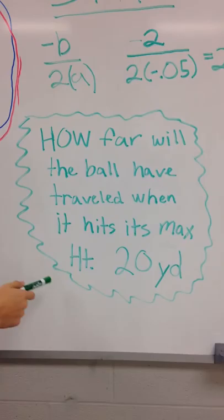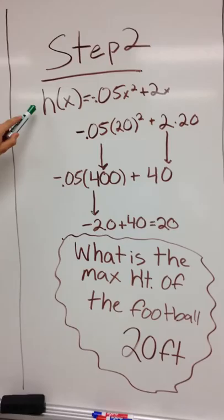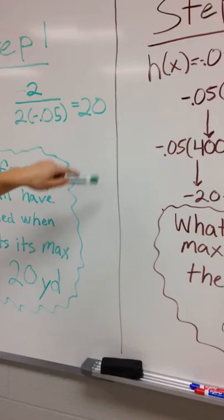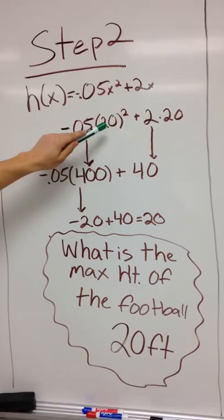Step 2: You take your equation h(x) = -0.05x² + 2x and plug in the 20 that we got from the previous problem. Take the 20 and raise it to the second power, and that equals 400.